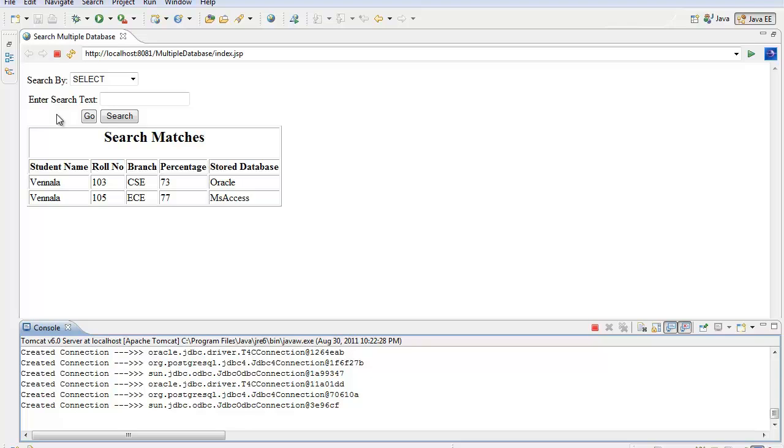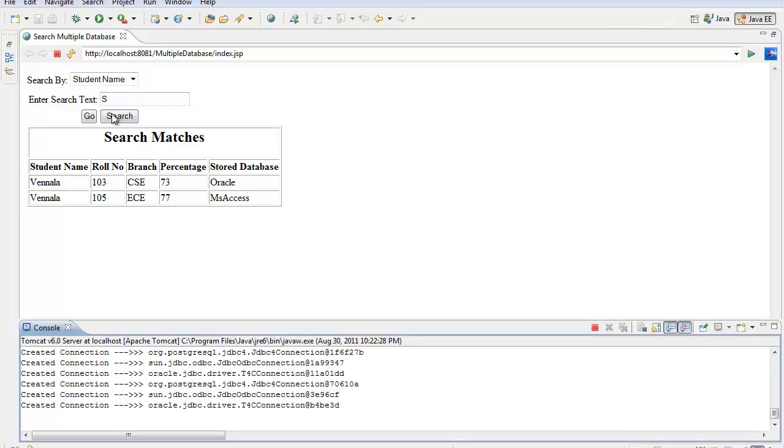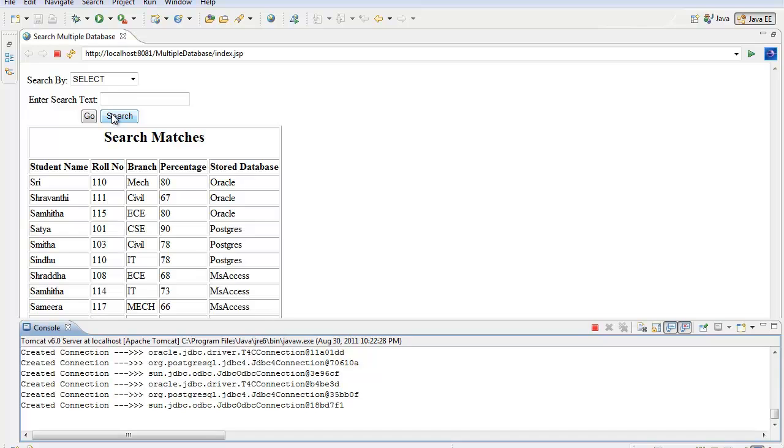We can also search the student record by just entering the first letter of the student name in the search text. The result displayed has records of all the students whose names start with the letter S.